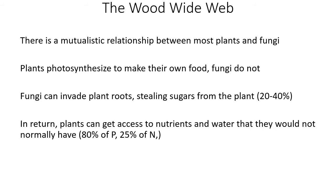In return, plants can access nutrients and water they wouldn't normally have — sometimes up to 80 percent of their phosphorus and a quarter of their nitrogen. This was important for early plants: there was no soil, just rock with microbial slime. Those early plants had to develop relationships with cyanobacteria for nitrogen fixation and with fungi to produce exudates that broke down rocky material and absorbed nutrients at a greater capacity than their small rhizoids could manage.